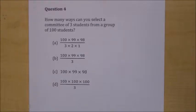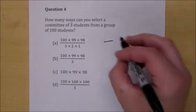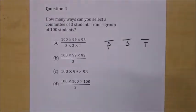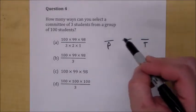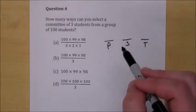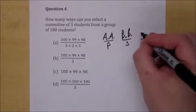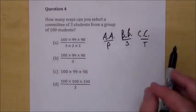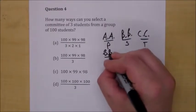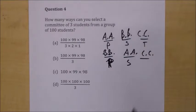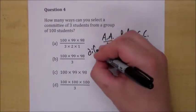Question four: how many ways can you select a committee of 3 students from a group of 100 students? We've now changed from permutation to combination. Why? Because order doesn't matter. If you had president, secretary, and treasurer, that would be 100 × 99 × 98 because order matters. For example, if AA is president, BB is secretary, and CC is treasurer, that situation is different than BB as president and AA as secretary — these are different arrangements.